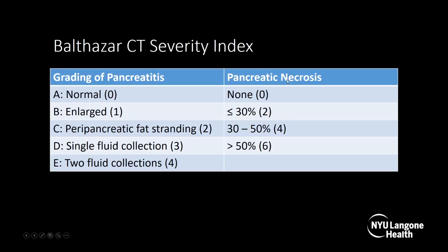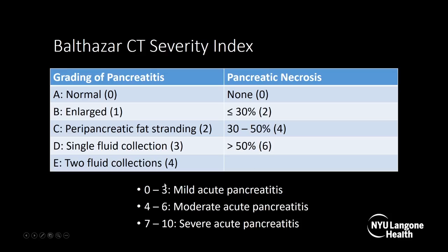Pancreatic necrosis is defined as non-enhancement of a portion of the pancreas — anything less than 30 Hounsfield units, or it looks like water. If the pancreas enhances completely, there would be no pancreatic necrosis. The degree of necrosis is graded as less than 30%, 30–50%, or over 50%, with each grade adding more points. You add up the points for your CT severity index: 0–3 points is mild, 4–6 is moderate, and 7–10 is severe acute pancreatitis.